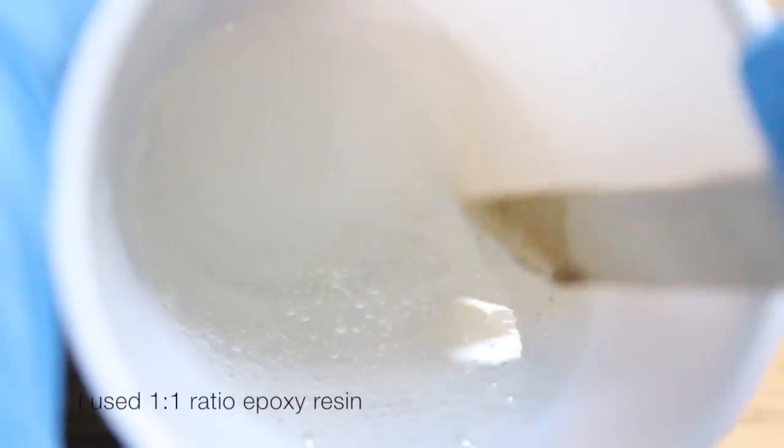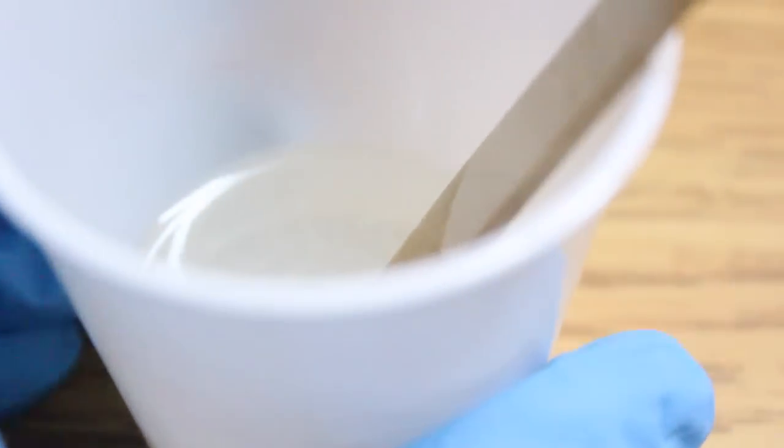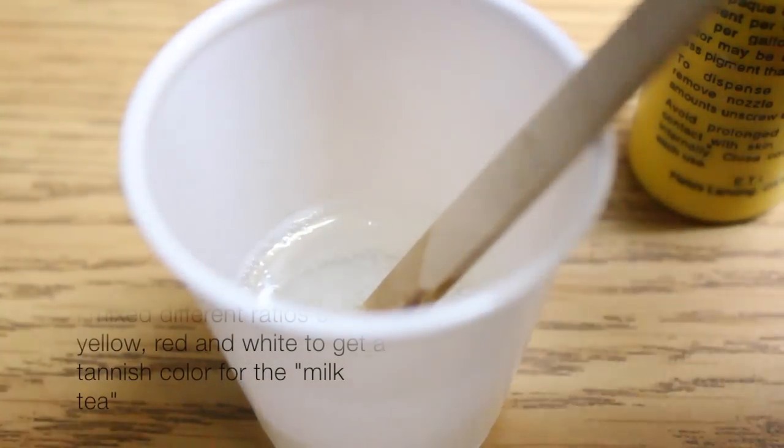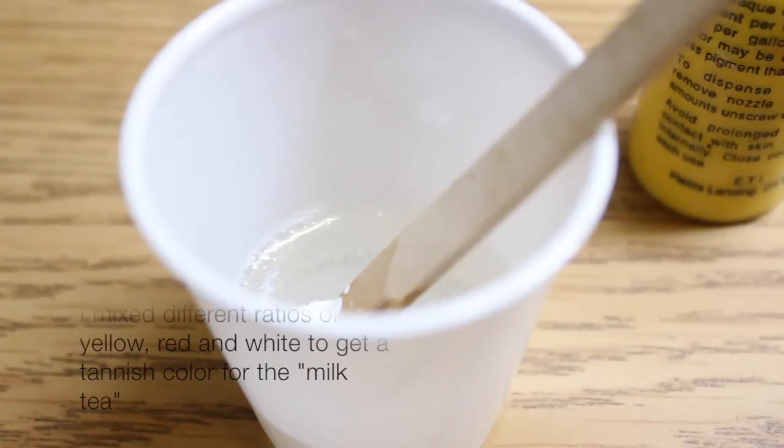Now you're just going to mix some resin. I'm using one-to-one ratio of epoxy resin and I mixed white, red, and yellow pigments to form the milk tea color.